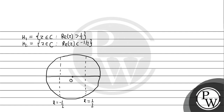इस point को हम बोल लेते हैं a2 point, और इस point को हम बोल लेते हैं b2 point। अब यहाँ पर एक दूसरा point आ रहा होगा — ये radius है। मान लो यह point a1 है, और यहाँ पर point a3 है।